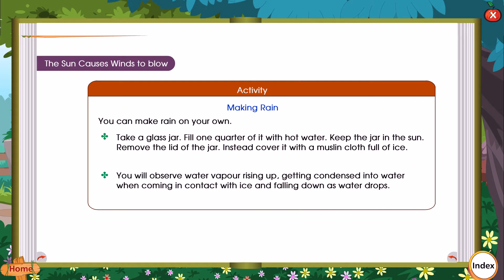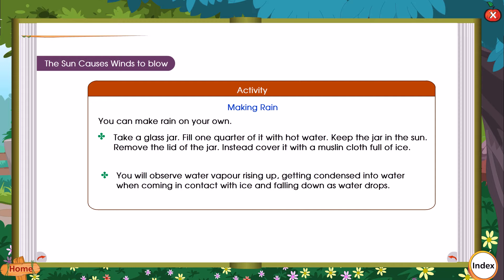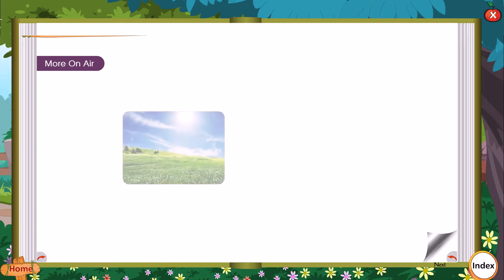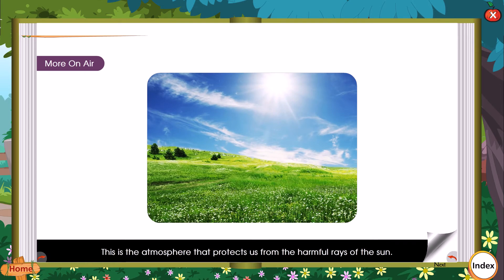You can make rain on your own. Take a glass jar and fill one quarter of it with hot water. Keep the jar in the sun and remove the lid. Instead, cover it with muslin cloth full of ice. You will observe water vapour rising up, getting condensed into water when coming in contact with ice, and falling down as water drops. This is similar to how rain forms.